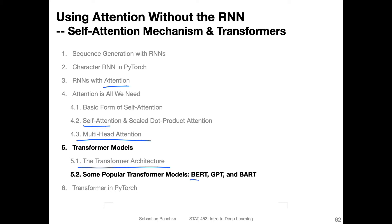For example, there are the BERT model, different types of BERT models, and then also GPT — GPT version one, two, and three — and the BART model, which combines BERT and GPT. All of these models have kind of interesting ideas. The models themselves are not very complicated; they are essentially small modifications of this transformer. They are also very popular — if you look at the news, people like to talk about these models, and it's interesting to go over how they are different from each other.